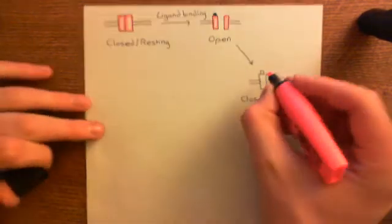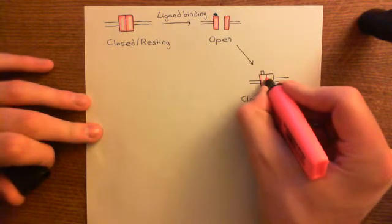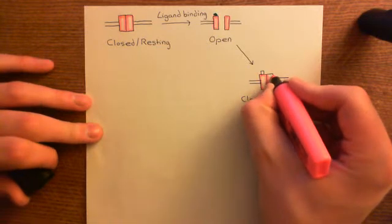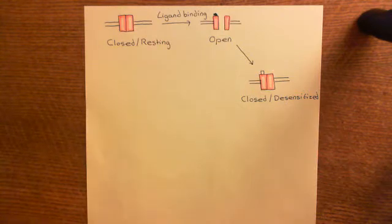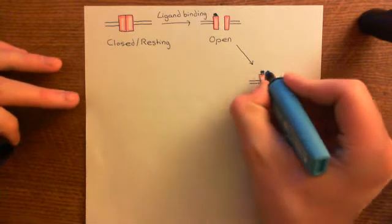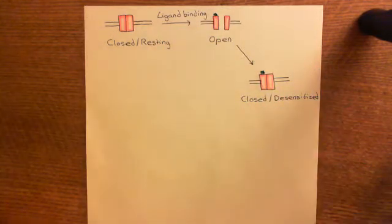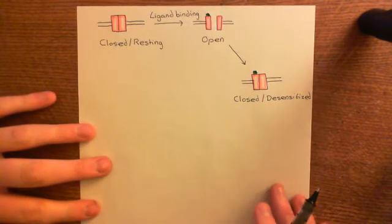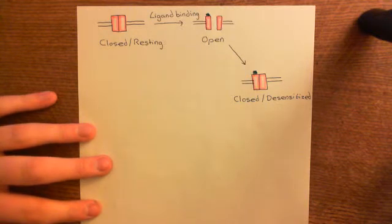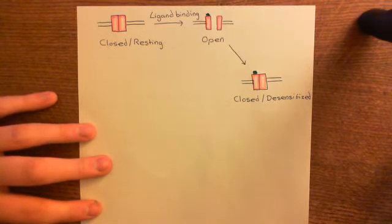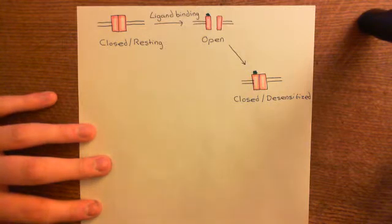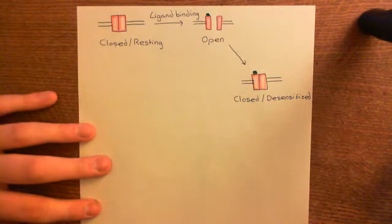Going from the open to the closed/desensitized state stops the movement of ions through the pore of the glycine receptor. The time the receptor takes to go from open to closed/desensitized is probabilistic — there is no set answer for how long it remains in the open state, and it varies between trials even for a specific single receptor.